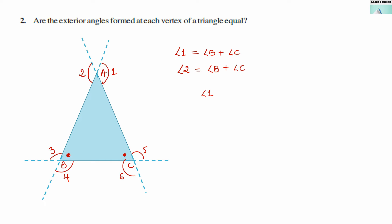Angle 1 and angle 2 are equal because they are vertically opposite angles. So the pairs that are equal are: angle 1 and angle 2, angle 3 and angle 4, and angle 5 and angle 6. For exterior angle 3, it is equal to the sum of angle A and angle C. But all the exterior angles are not equal to each other — only the vertically opposite pairs are equal.